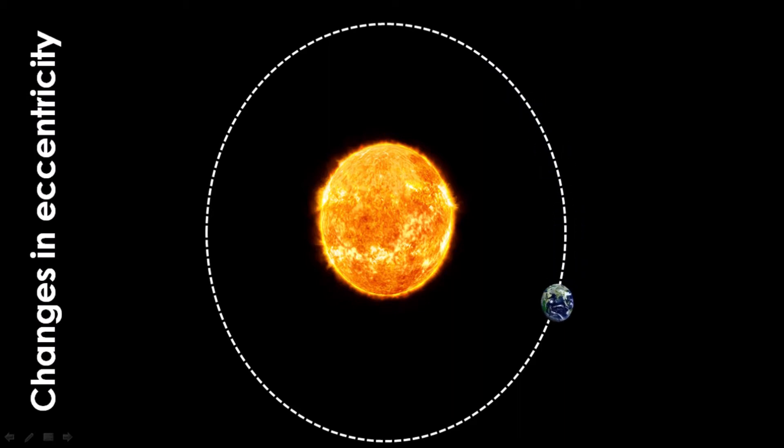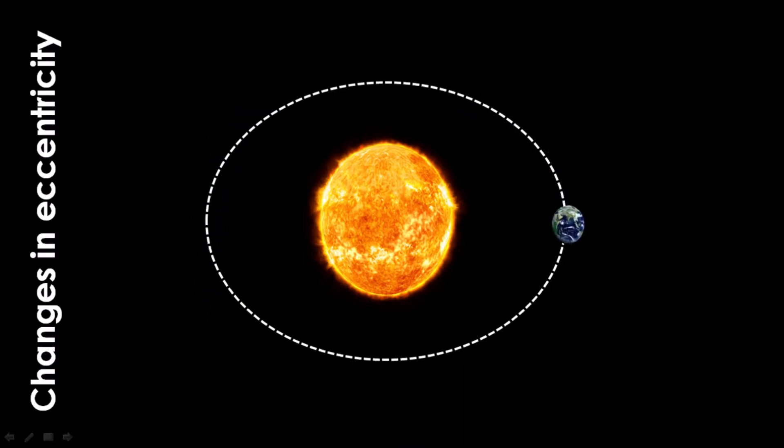The first element is known as changes in eccentricity. When we talk about eccentricity, we're talking about the journey the Earth takes around the sun and the fact that it isn't a perfect circle, but it is pretty close. Over time, the pull of gravity from our solar system's two largest gas giant planets, Jupiter and Saturn, actually caused the shape of the Earth's orbit to vary from nearly circular to slightly elliptical.